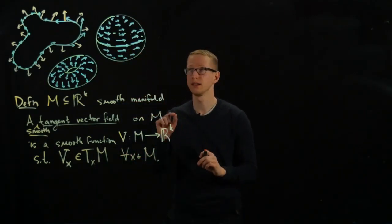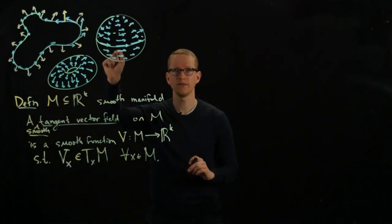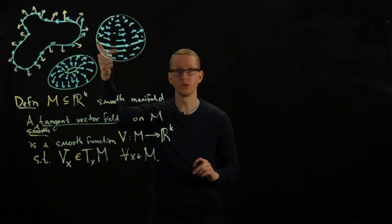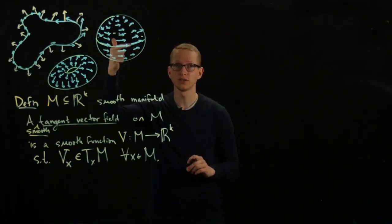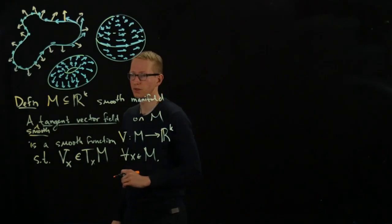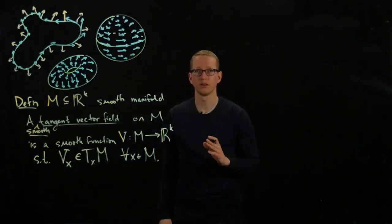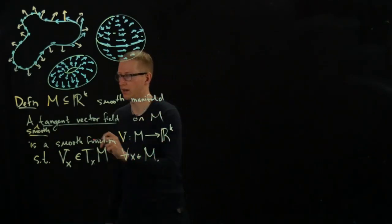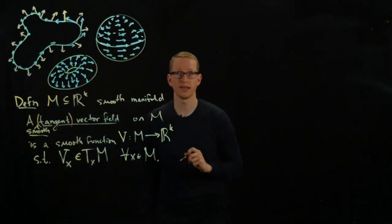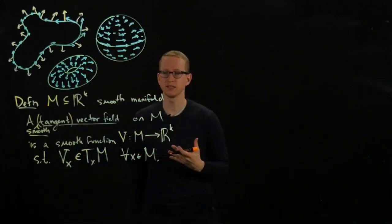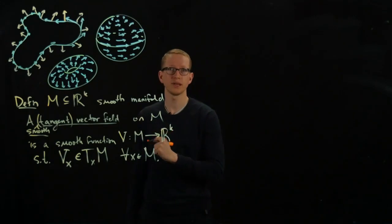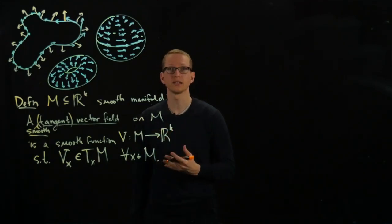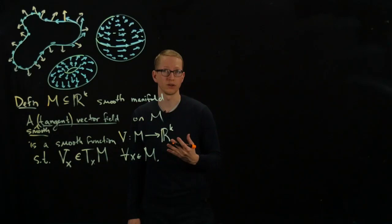So it says that for every point on the manifold that we have, the tangent vector, this vector which is a vector in R^K, is actually in the tangent space of the manifold at that point. This is what we mean by a smooth tangent vector field, and I may often, though I shouldn't, omit the word tangent. We made sense of what it means to define the index of a vector field at a critical point in Euclidean space. We can also try to make sense of what it means to calculate the index of a vector field on a manifold at a critical point.